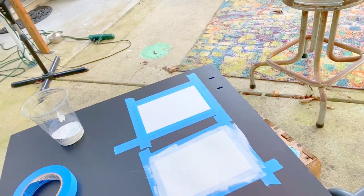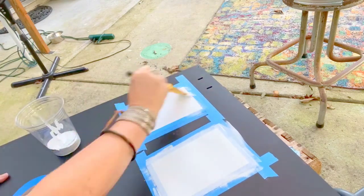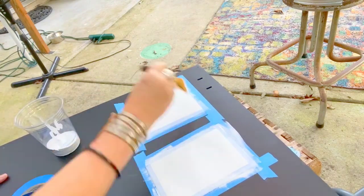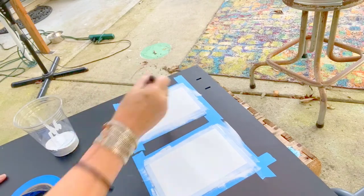The brush that I'm using to apply gesso is a synthetic bristle brush, nothing fancy, but it's about two inches wide. It'll do a great job.